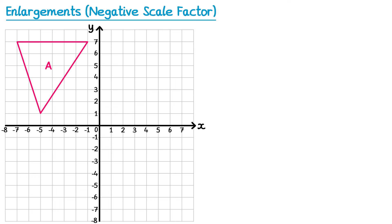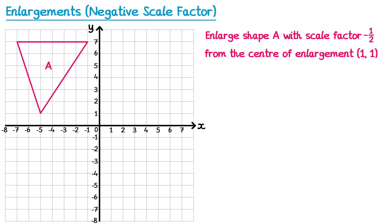When we did regular enlargements, sometimes the scale factor was a fraction. Let's look at one that's also negative. We enlarge a shape with scale factor negative one half from center (1, 1). I mark the center and pick the first point — the green cross. The journey from the center is 6 to the left. Since it's negative, we go in the opposite direction — to the right. And since it's scale factor negative one half, we go half of 6, which is 3 to the right. The green cross maps to its new position.